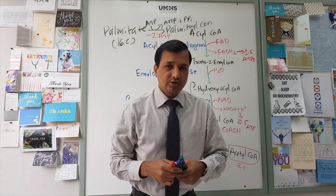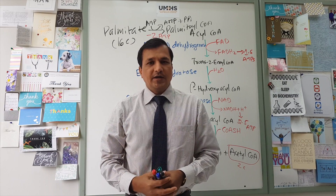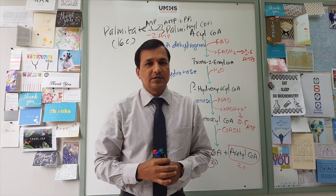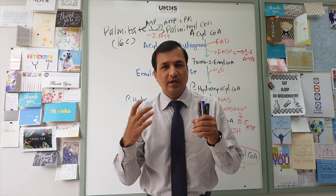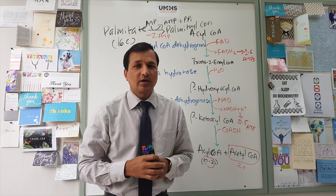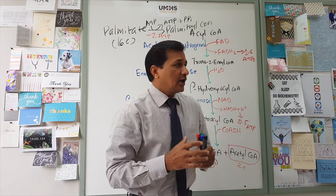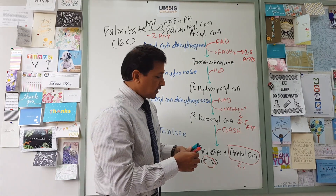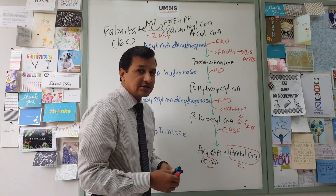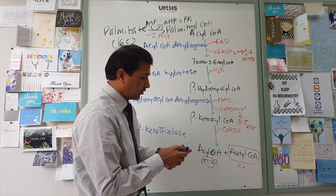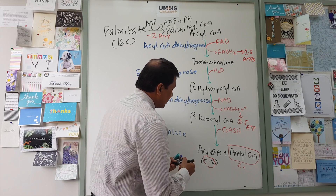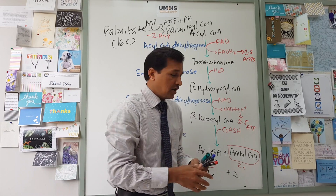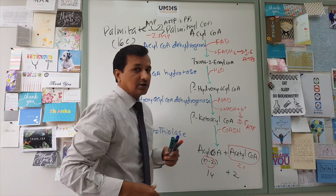Once palmitoyl-CoA is active, it can enter the mitochondrial matrix through the carnitine transport mechanism. I have a video on the carnitine shuttle mechanism available via the link in the upper right corner and in the description below. Palmitoyl-CoA then goes through all four beta oxidation reactions, and at the end you get a fatty acid with two fewer carbons — a 14-carbon molecule — and two carbons are released as an acetyl-CoA molecule.